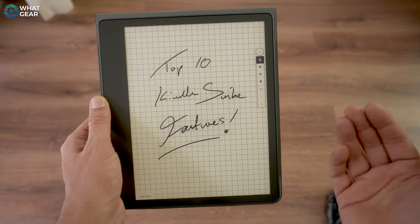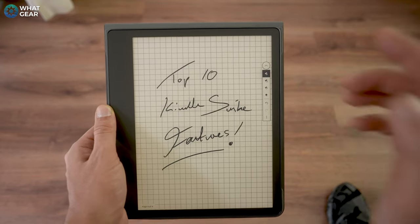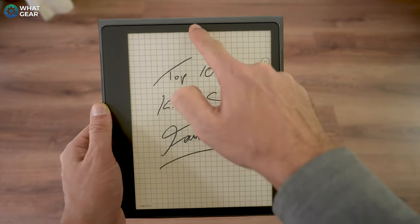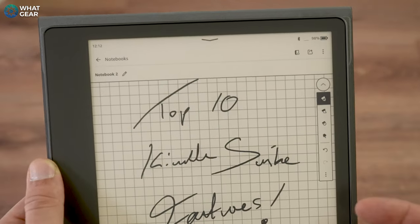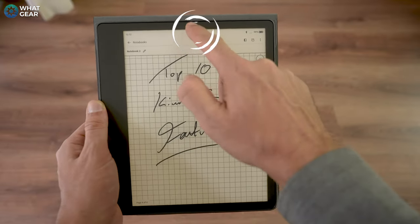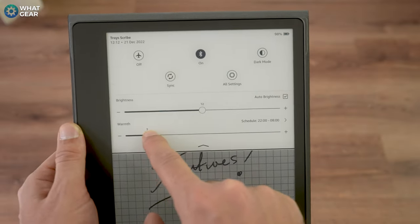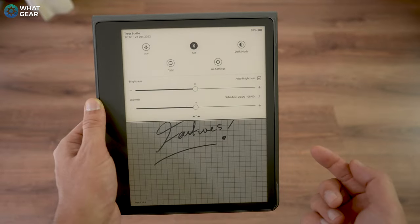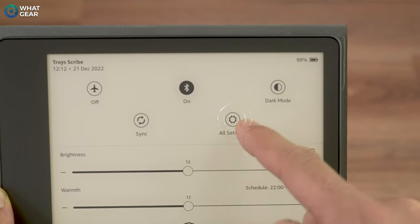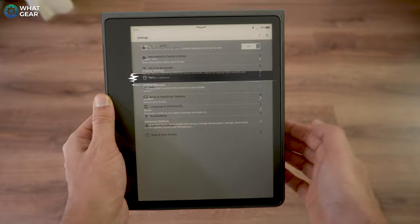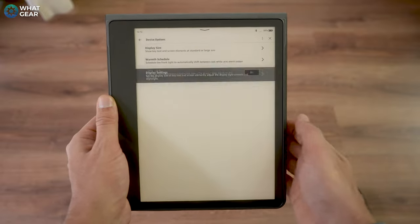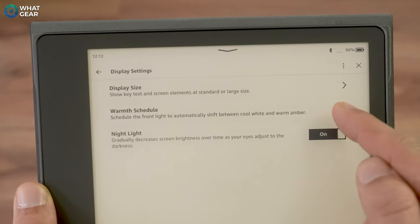To do this you need to access the settings on the device and no matter what page you're on all you need to do to access this is tap the top of the screen and a drop down will appear. Then if you tap this downward arrow you'll get more options so here you can adjust the brightness and the warmth of the tablet. But what we're going to go to now is this all settings, here we're going to go to device options and then display settings and then here warmth schedule.